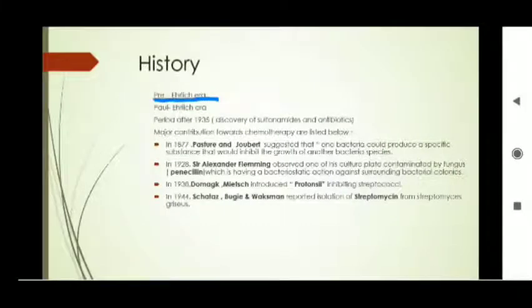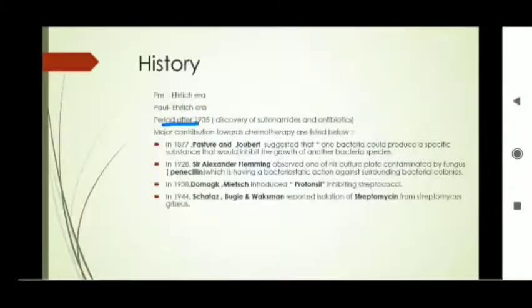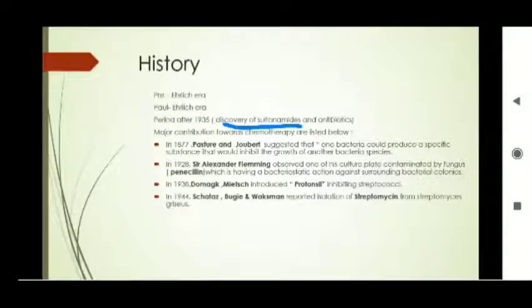The history of chemotherapy is divided into three eras: the pre-Ehrlich era, the Paul Ehrlich era, and the post-1935 era — when the discovery of sulfonamides was made.